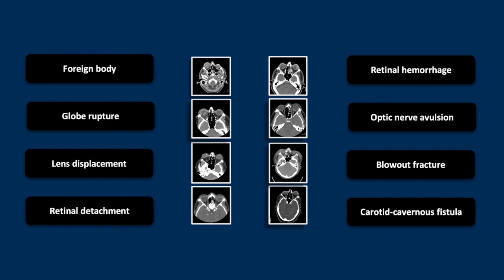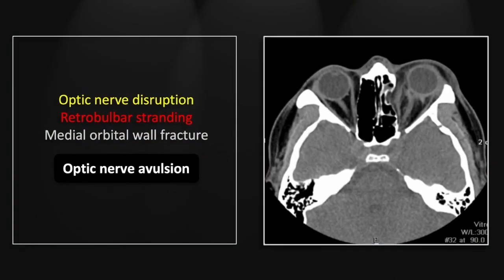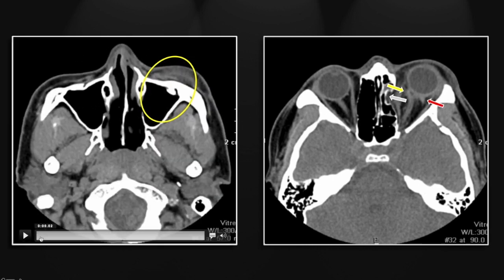The next case is a pretty unusual injury: an optic nerve avulsion from a direct blow. You can see the optic nerve is detached from its appropriate position on the posterior aspect of the globe. There is retrobulbar stranding that should call your attention to this abnormality, and in addition there is displacement of the medial orbital wall consistent with a blowout-type fracture. The specific displacement of the optic nerve could be very difficult to spot.